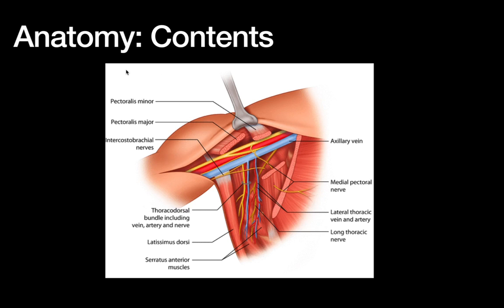When trying to get out the lymph nodes, we want to preserve everything else. What we really need to focus on within the axilla is the nerves, because if you get into blood vessels you can always stop bleeding, but if you divide a nerve you cannot regain function. So the nerves are really the key structures.